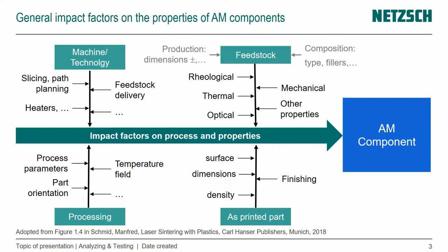For the as-printed part, the surface is very important. Remember, we have a very rough stair-step-like structure. The dimensions are critical for assemblies, and the density that we can achieve. We're putting a circular filament into the print head and extruding it out of a circular nozzle, but we really want a rectangular shape of the bead. So it's very easy to get little voids at the cross-section, at the intersection of different beads. Finishing is therefore very important — polishing, tumbling with media, or vapor smoothing, which is quite common.